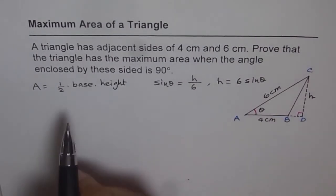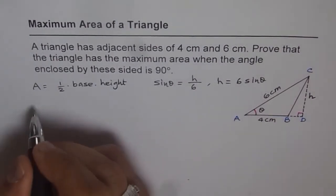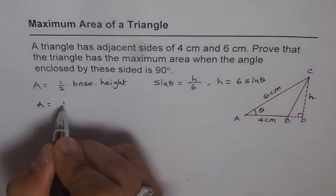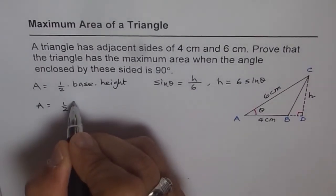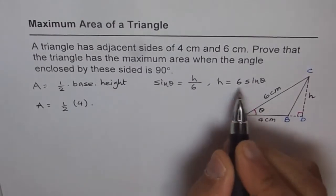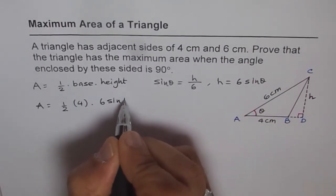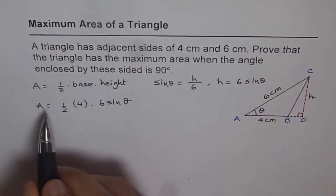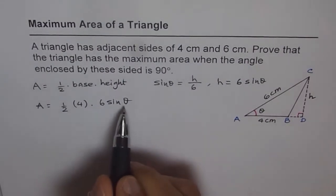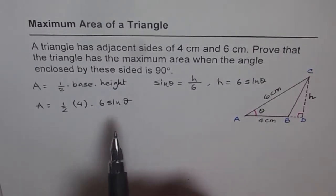So in this area formula we have everything. So we can write down area as equals to half and base is 4 cm for us. Let's write 4 here and height is 6 times sin theta. So that is area as a function of theta. Now it is easier for us.